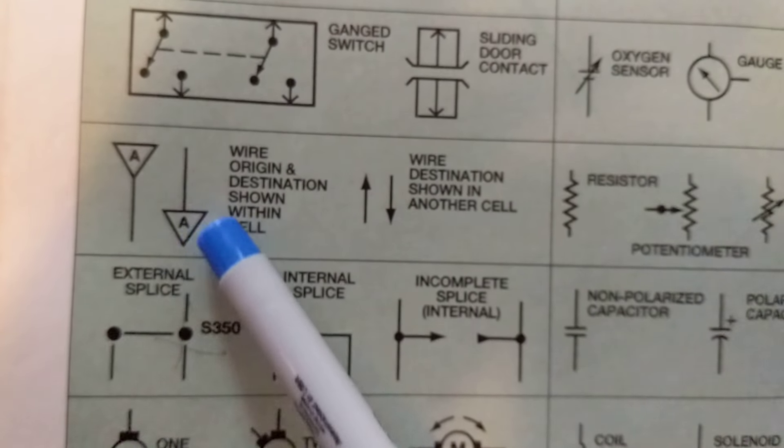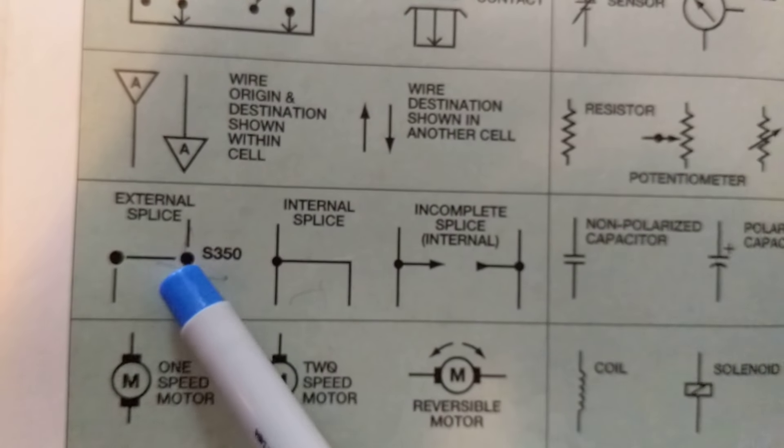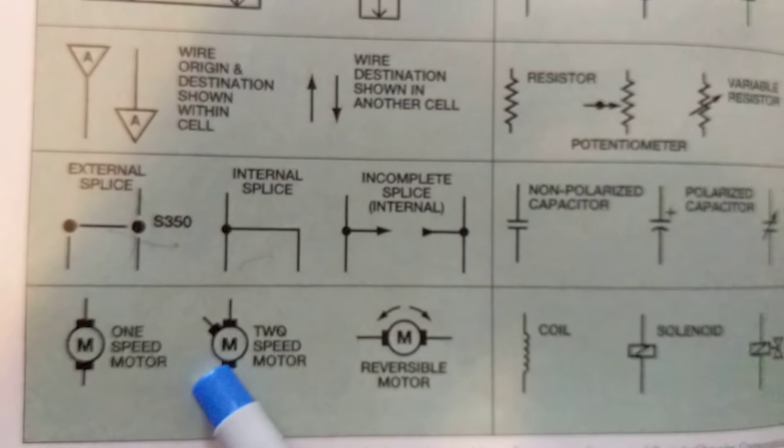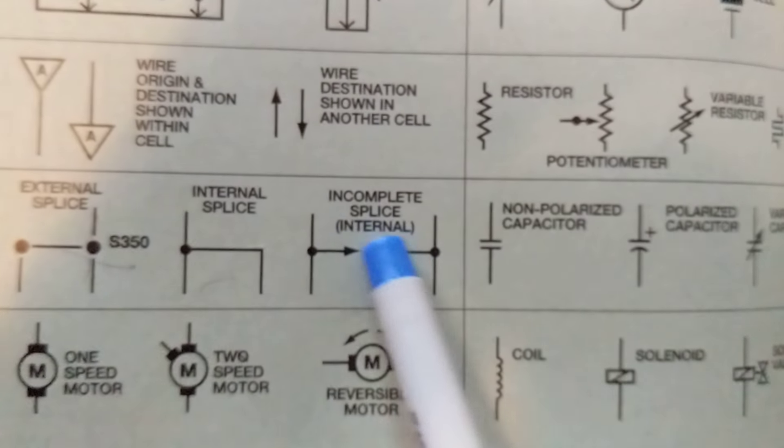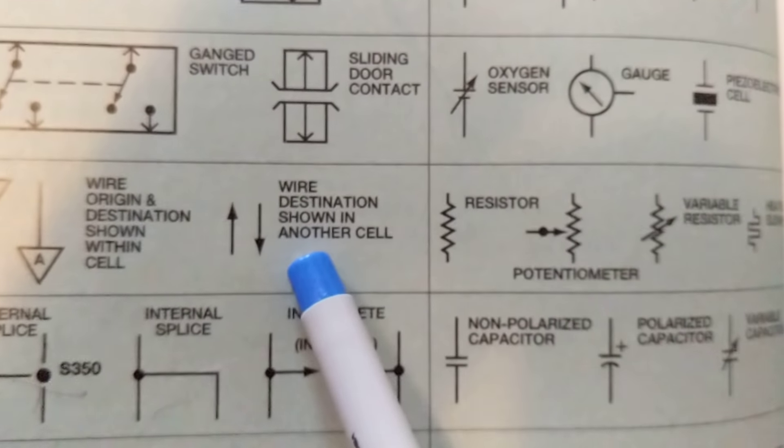This dictates it's going to another part of the schematic. This tells you this is a splice of many wires together, many connections together. Whenever you see this, incomplete splice, splice incomplete, internal splice, these are the basics.